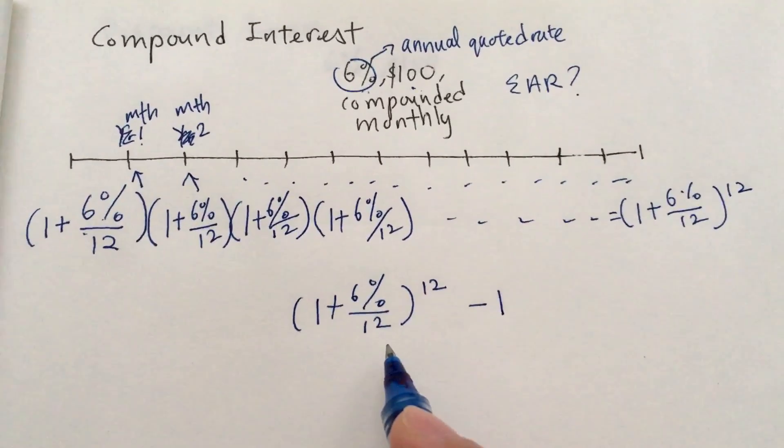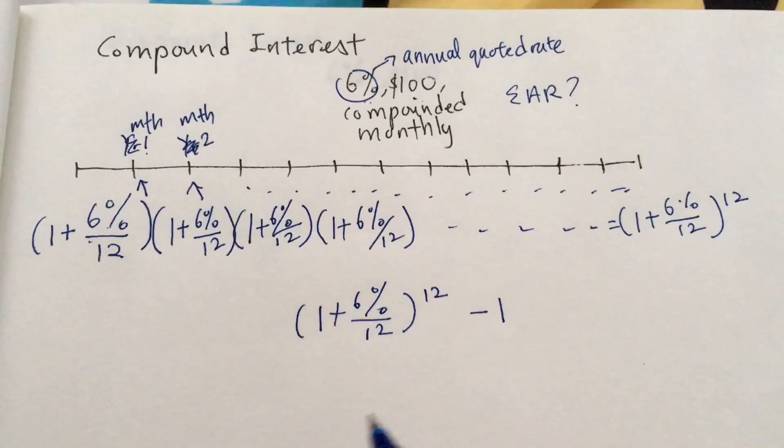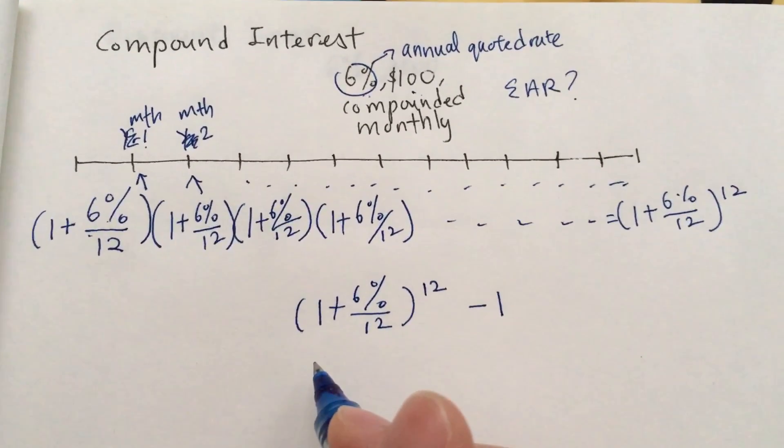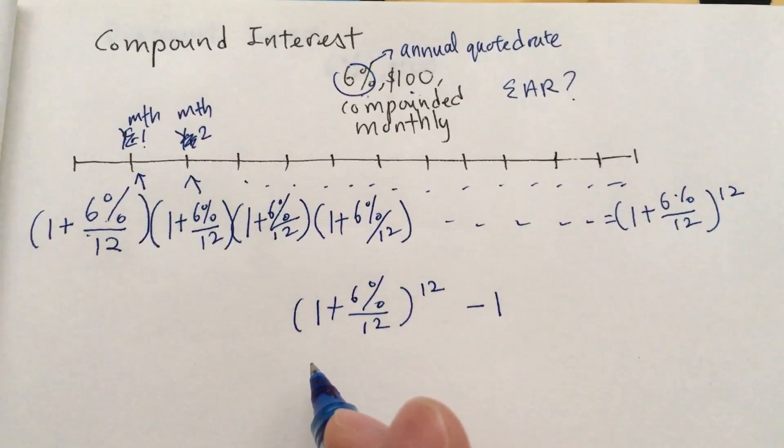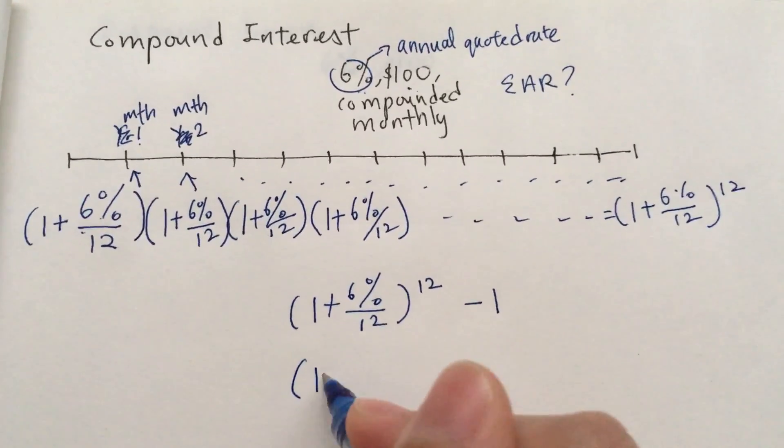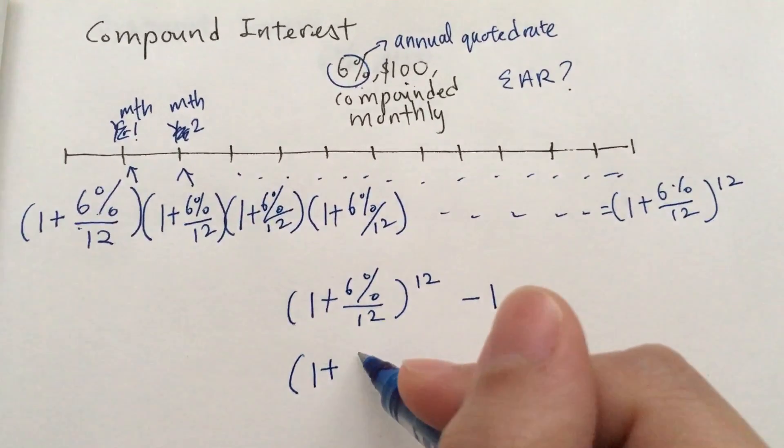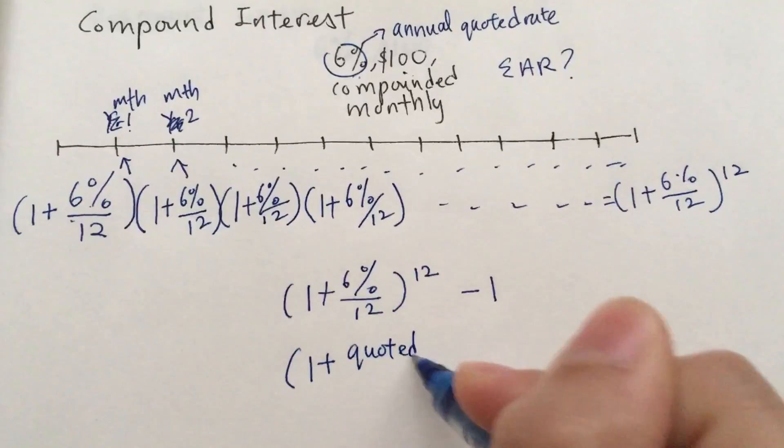Now if you look at this closely, you realize that this is the formula for calculating the effective annual rate of a compound interest loan, which is 1 plus the quoted annual rate